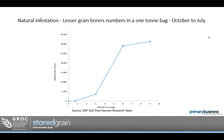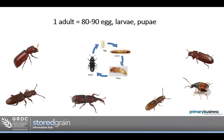Something else we've recently found through research: someone asked — for every adult insect that we're monitoring, how many egg, larvae, and pupae can we expect? The research found that for every adult you find in grain, expect 80 to 90 egg, larvae, or pupae. It's easy to see how numbers build up quite quickly.